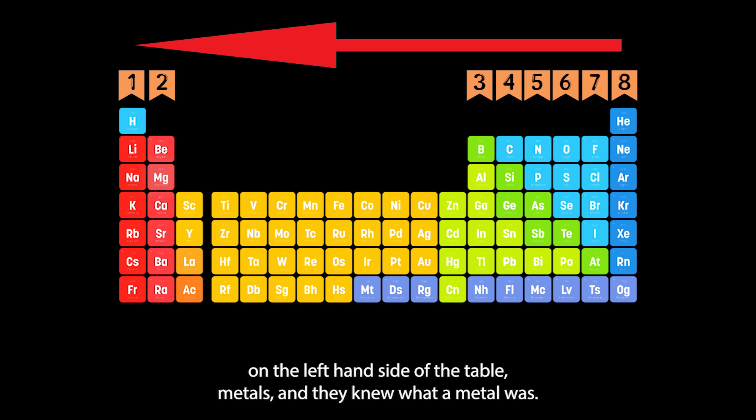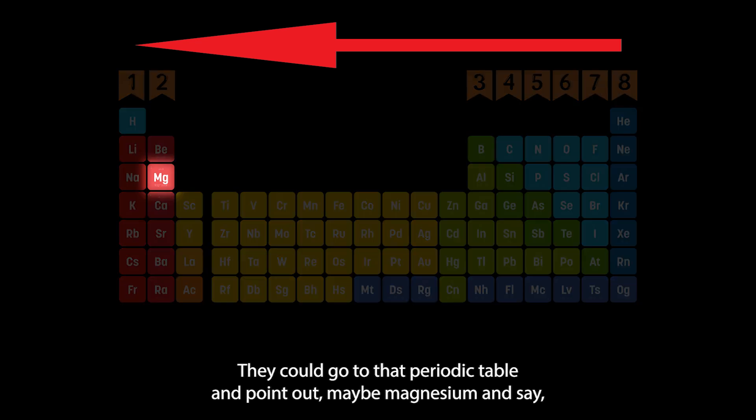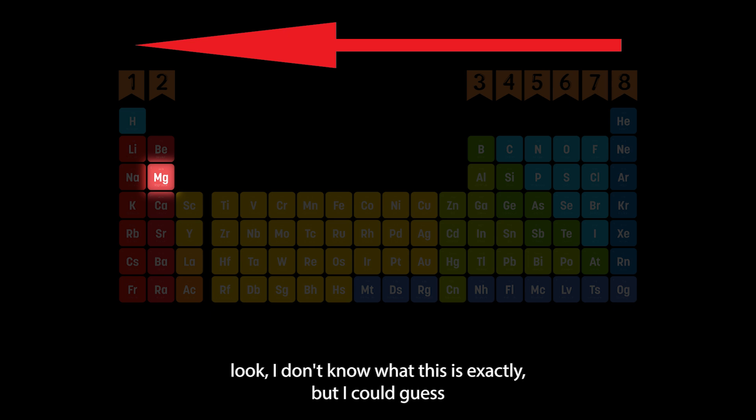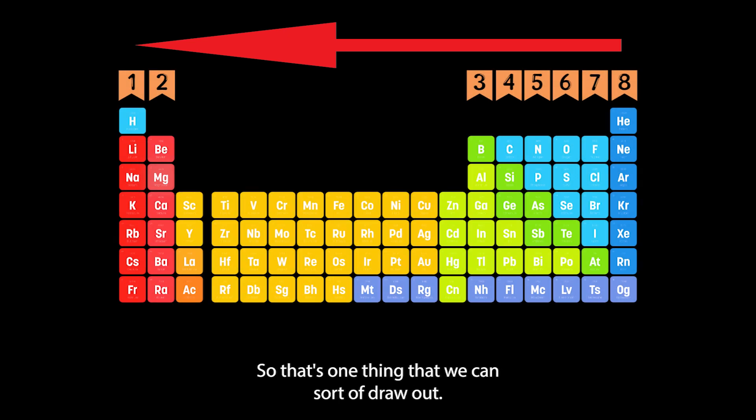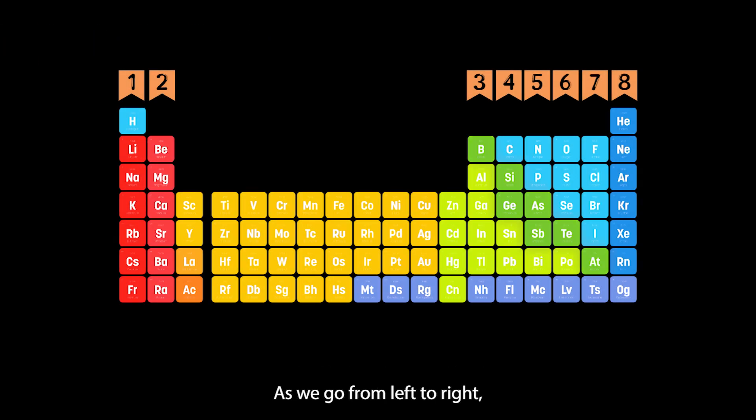If I was to go and tell someone that elements on the left hand side of the periodic table are metals and they knew what a metal was, they could go to their periodic table and point out magnesium and say, I don't know what this is exactly but I could guess because I know what a metal is that it's probably a good electrical conductor and all of these other things. You can see that because they know what's on the left, they instantly know its properties.